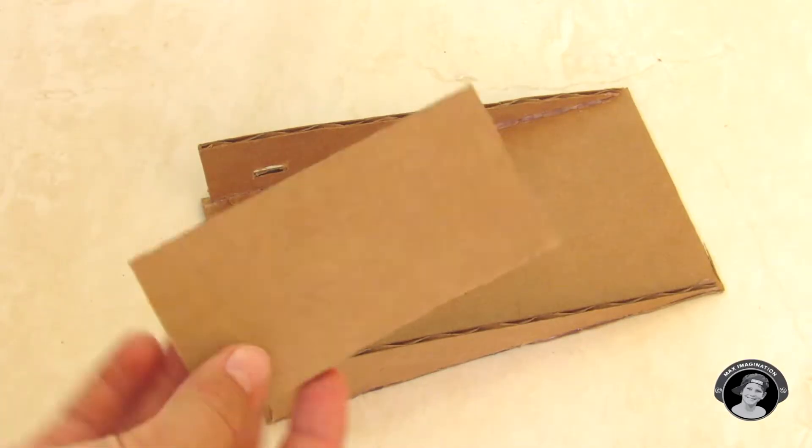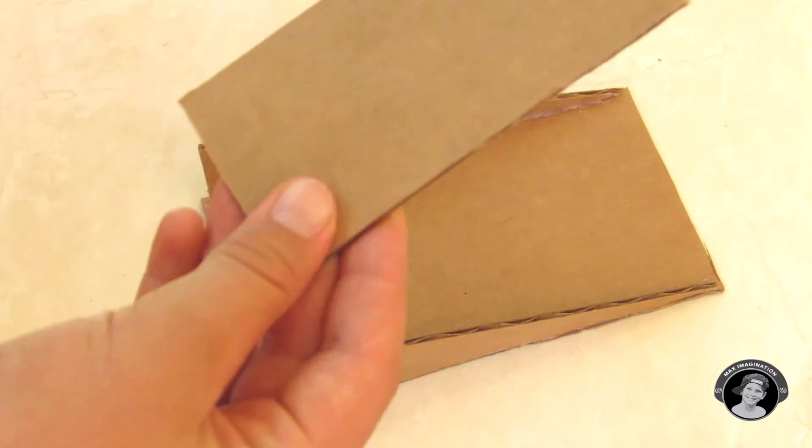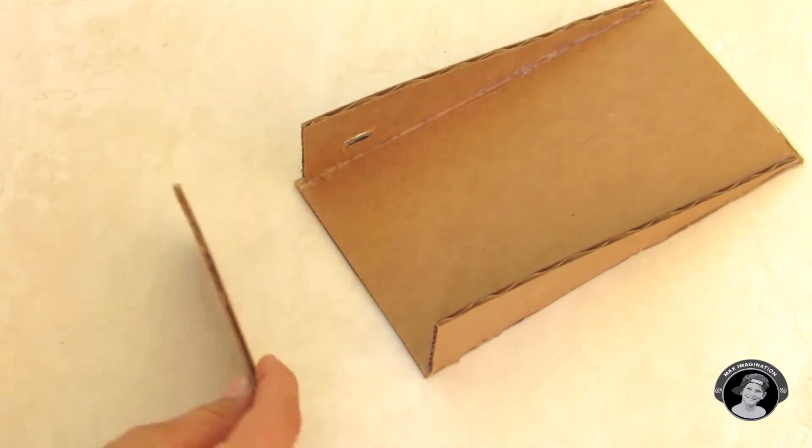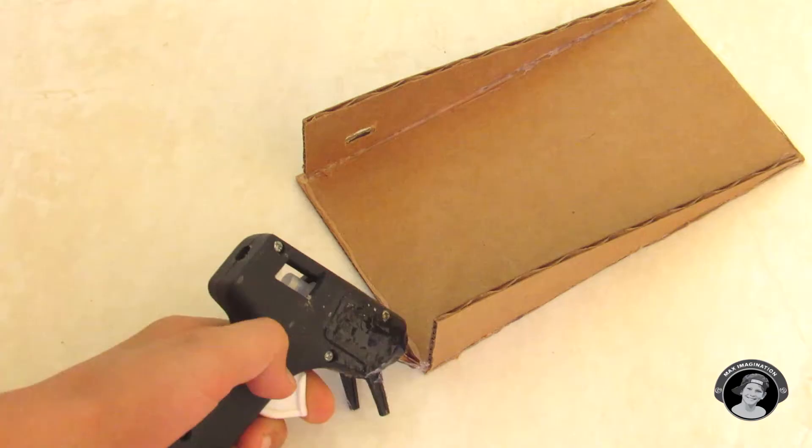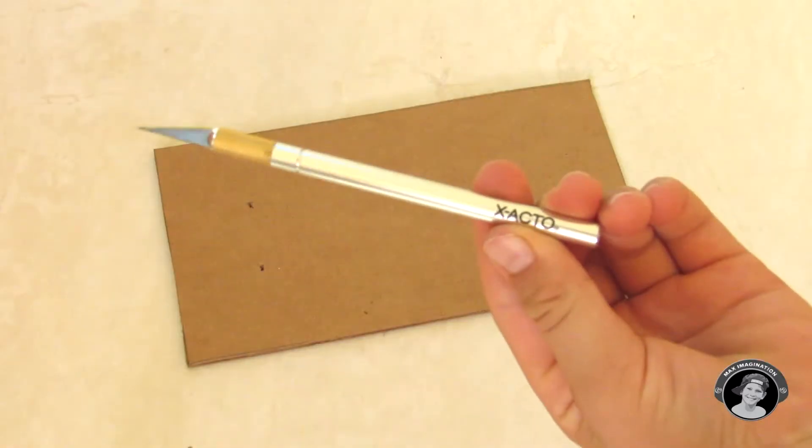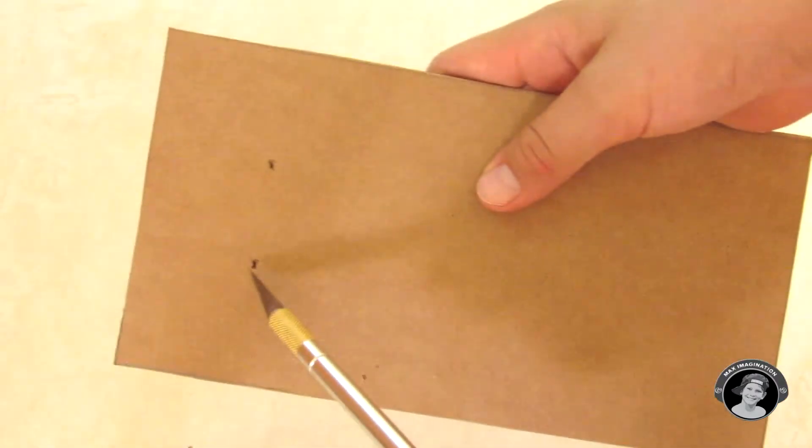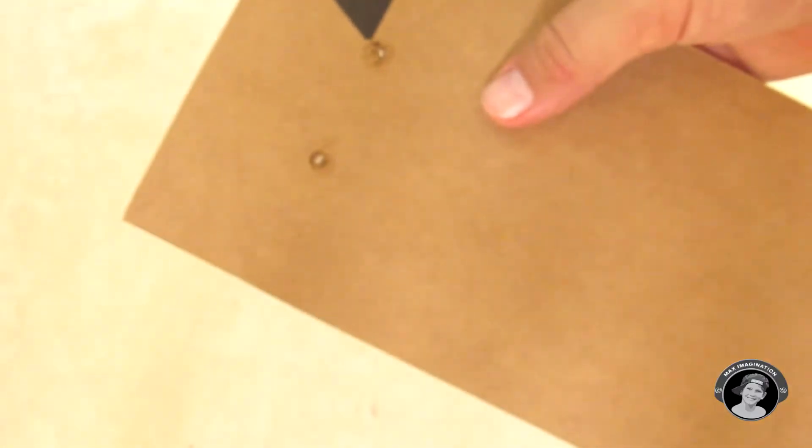Now I'm going to glue this cardboard piece on that measures five and a half centimeters by eleven. Now using your exacto knife you're going to make two holes right here, and this is where our DC motors will be sitting.